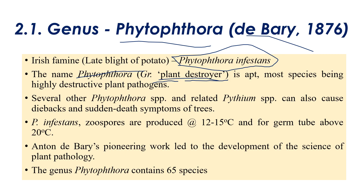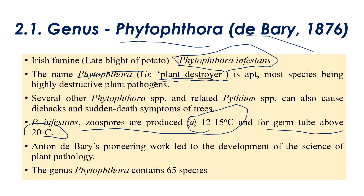Most species belonging to Phytophthora are highly destructive, causing majority of yield losses. Several Phytophthora species, like Pythium, can cause diebacks and sudden death diseases on trees, and in rare cases also cause damping off. Zoospore production occurs at temperatures of 12 to 15°C, germ tube production requires around 20°C, and sporangia production requires around 17°C. Anton de Bary did phenomenal work on Phytophthora that led to the initiation of the branch of plant pathology.